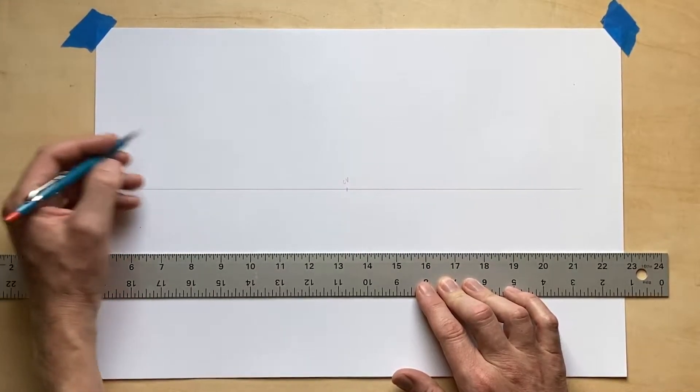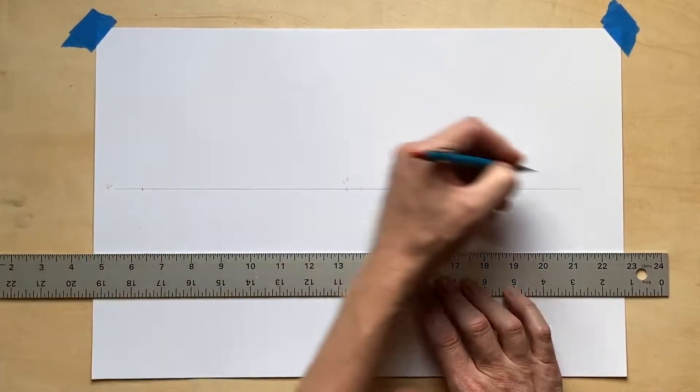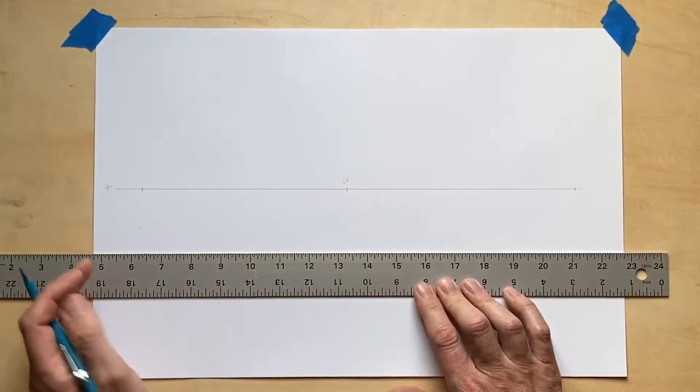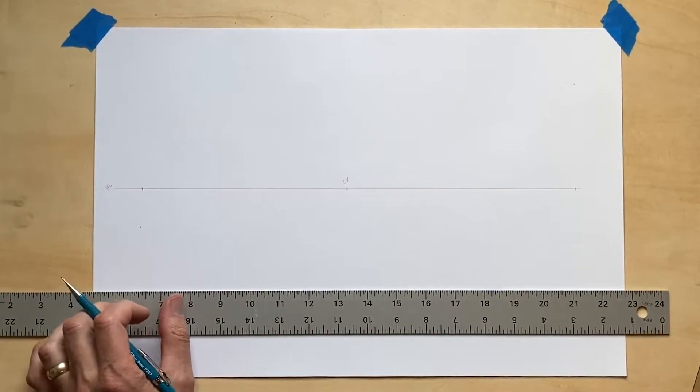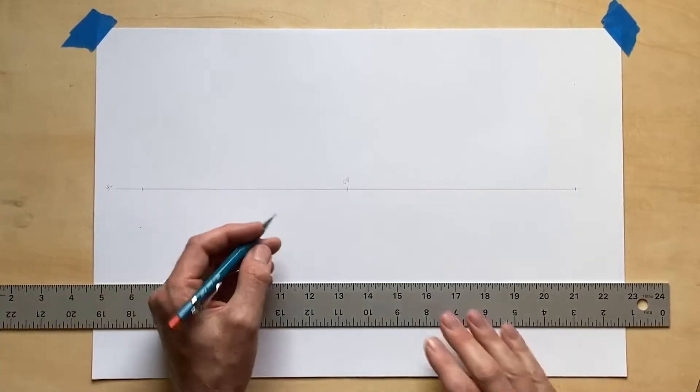As with all perspective drawings, it is important to set the scene by locating all the necessary elements, including the horizon line, center of vision, and for this drawing, two vanishing points.